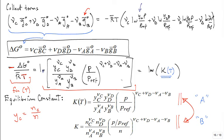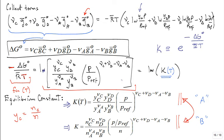After collecting terms, we get ΔḠ⁰ / (R̄T) = −ln(K), so K is defined as e^(−ΔḠ⁰ / R̄T), which is only a function of temperature. Once you've introduced this equilibrium constant, you can write the result in two compact forms — version A in mole fractions and version B in amounts — and they are equivalent.